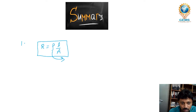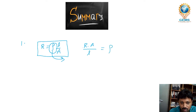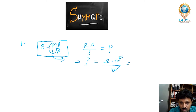What is the unit of resistivity? It is simple to find: rearranging R = ρL/A gives ρ = R·A/L. The unit of resistance is Ω, area is m², and length is m, so Ω·m² divided by m gives the unit of resistivity as Ω·meter.